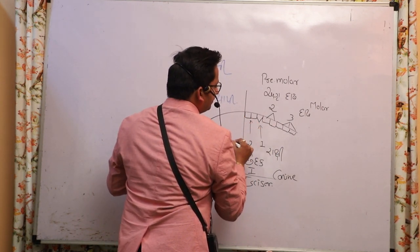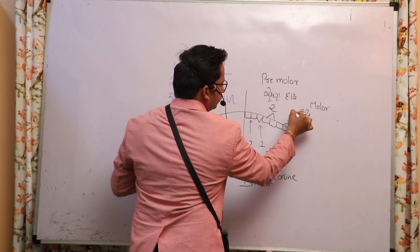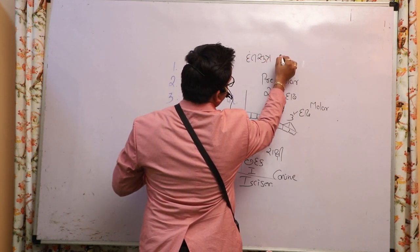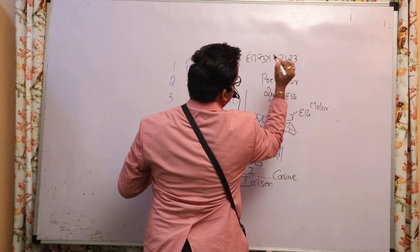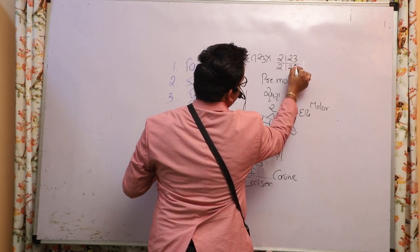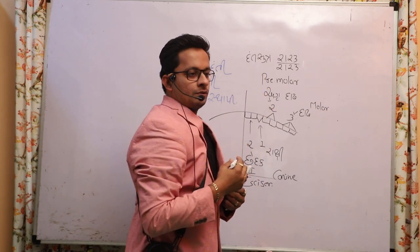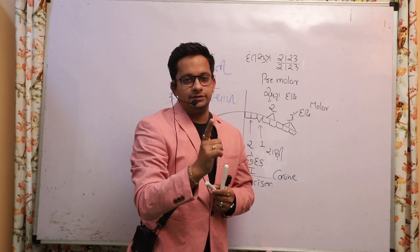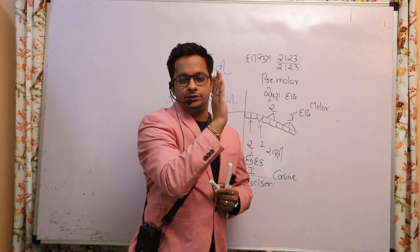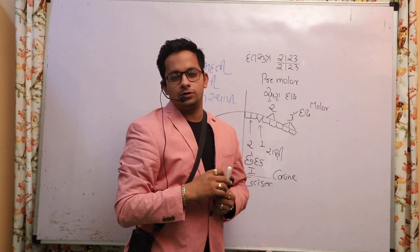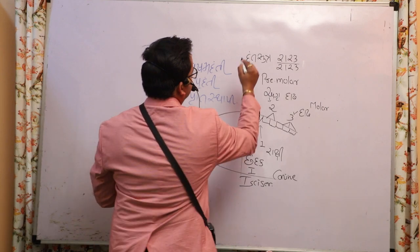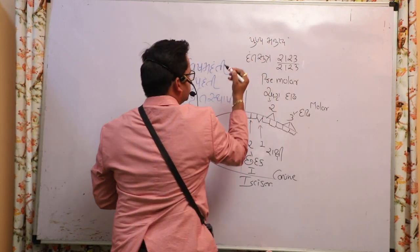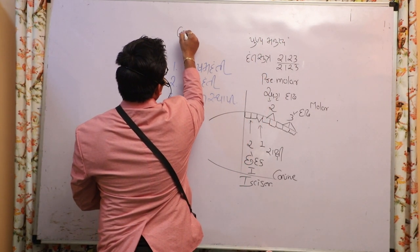The molars are called dad. So there are four types of teeth: first is the incisor (chhedak), second is the canine (rakshi), third is the premolar (agradad), and fourth is the molar (dad). In this way, our dental formula is formed. The adult human dental formula is 2-1-2-3.